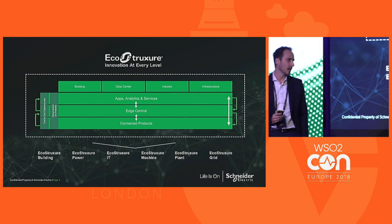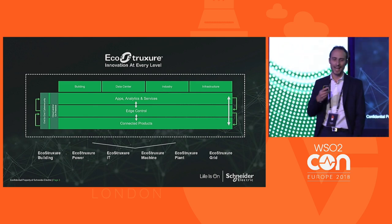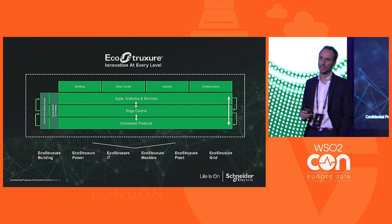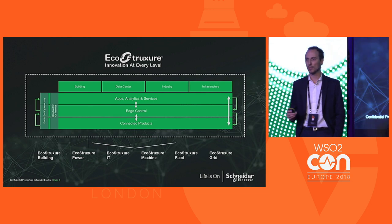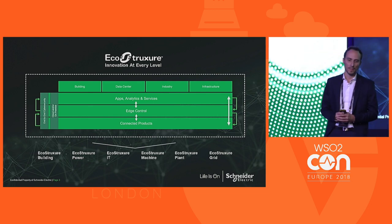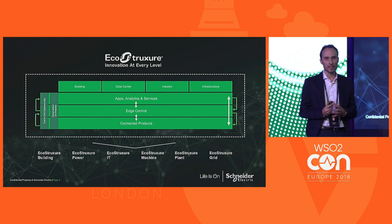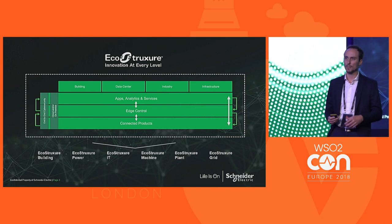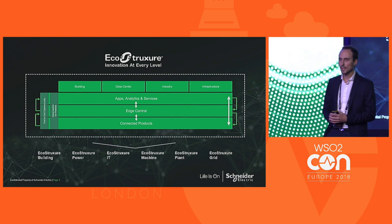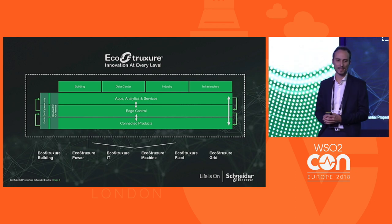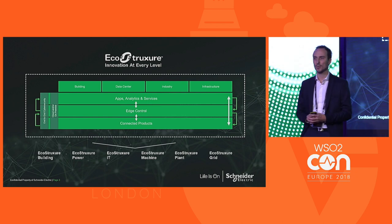EcoStruxure is an IoT-enabled, open, interoperable architecture and platform. It allows us to innovate following current technology trends such as mobility, cloud, sensing, analytics, and cybersecurity.